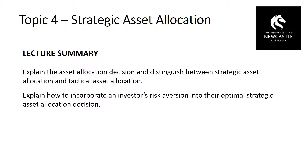Strategic asset allocation is about bringing in the individual investor's own characteristics to determine their optimal asset allocation. The main characteristic we focus on is the investor's risk aversion. Economic theory tells us that investors as a whole are risk averse — they require additional expected return in order to invest in an asset with a higher level of risk. However, the degree of risk aversion differs across investors.